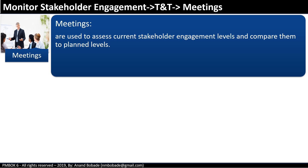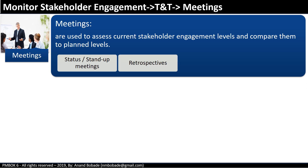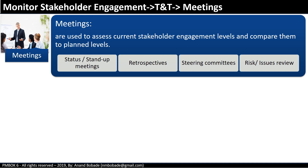Meetings are used to assess the current stakeholder engagement level and compare it to the planned level. Examples include status meetings, stand-up meetings, retrospective meetings in an agile environment, steering committees, and risk and issue-related meetings. Data analysis and data representation techniques can be applied in these meetings to come up with options to align stakeholder expectations.